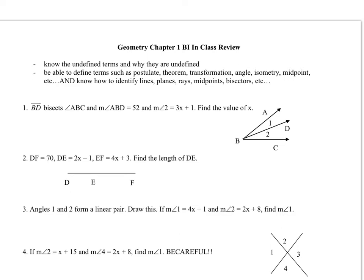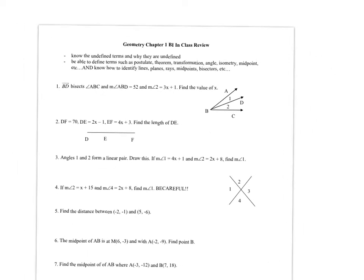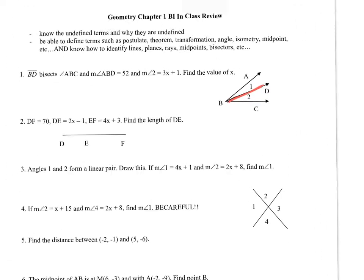Here is the review for the Chapter 1 test. The first question tells us that ray BD bisects angle ABC. So we know that this ray right there is the angle bisector. So let's work on that.